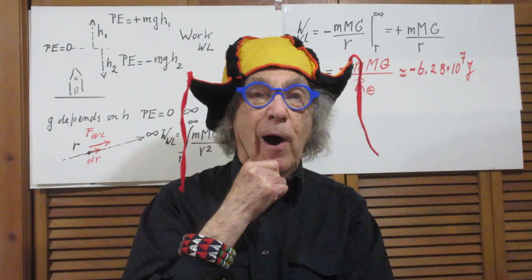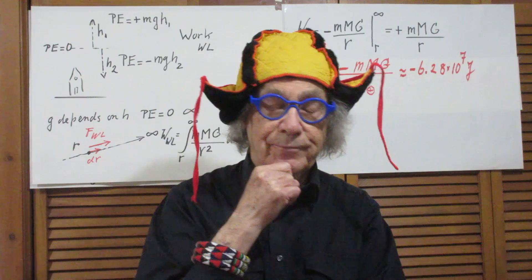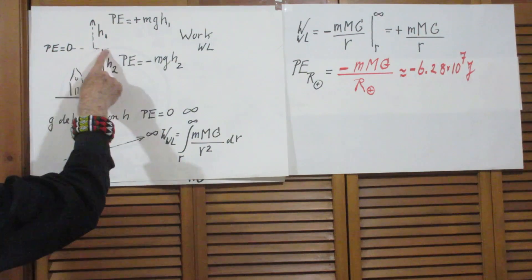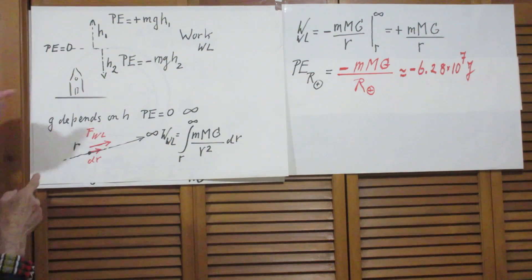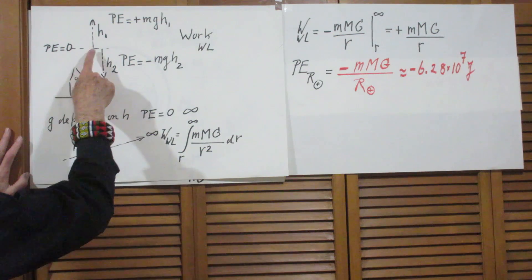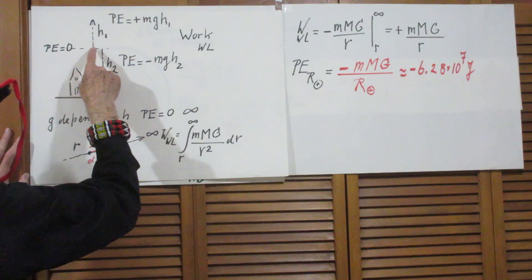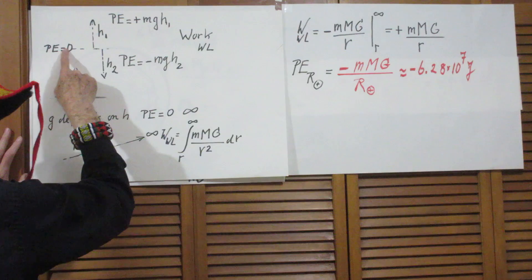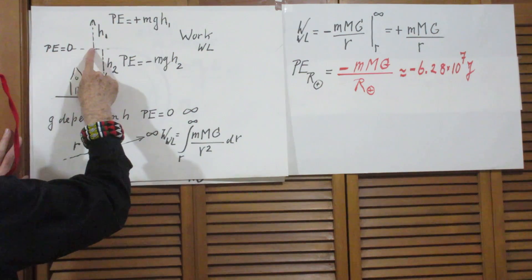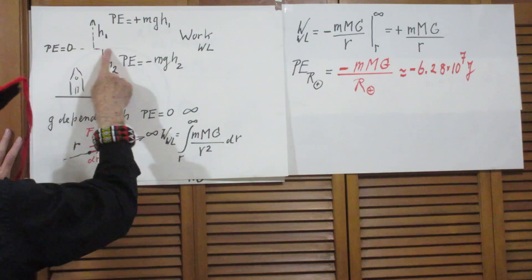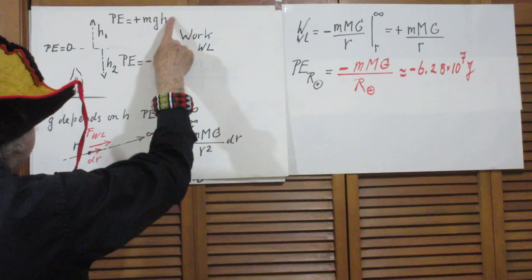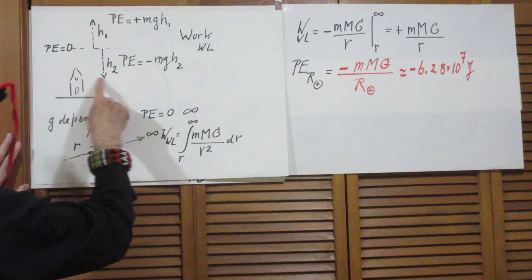Let's first agree on how we define gravitational potential energy. This is the ground, this is my house — I arbitrarily call this level gravitational potential energy zero. That's my choice. If I want to know what the gravitational potential energy is at level h1 above, PE equals zero plus mgh1. It's positive because the work that I have to do to move mass m from zero potential energy to this point is positive work. So the work Walter Lewin has to do is plus mgh1.